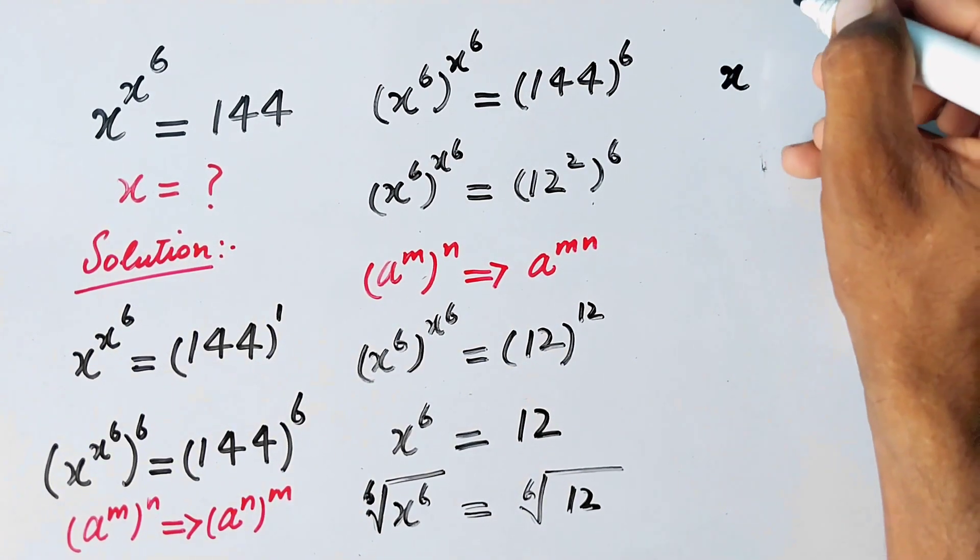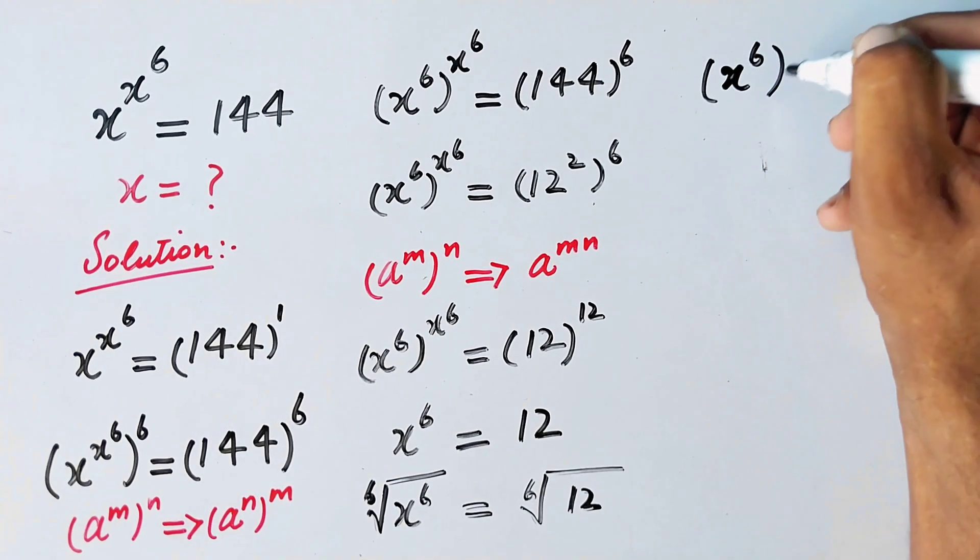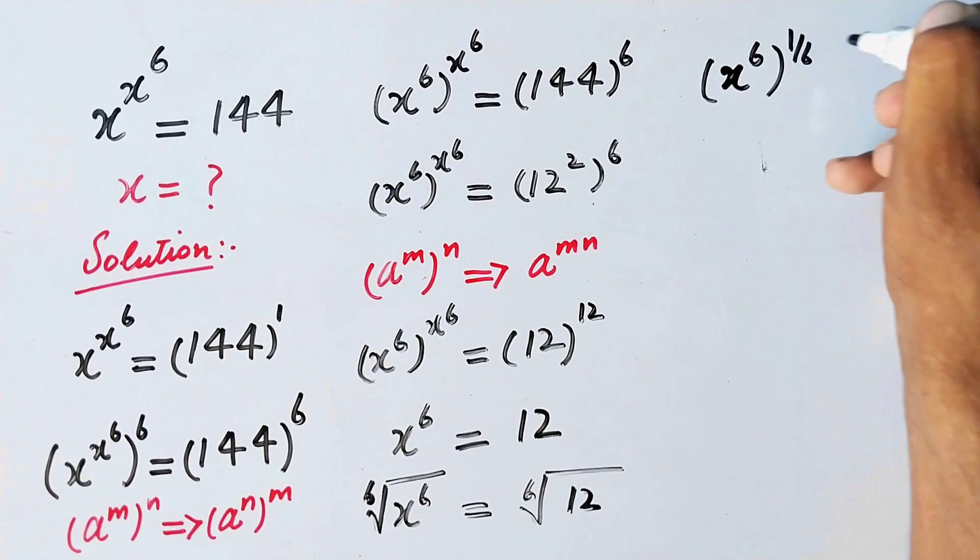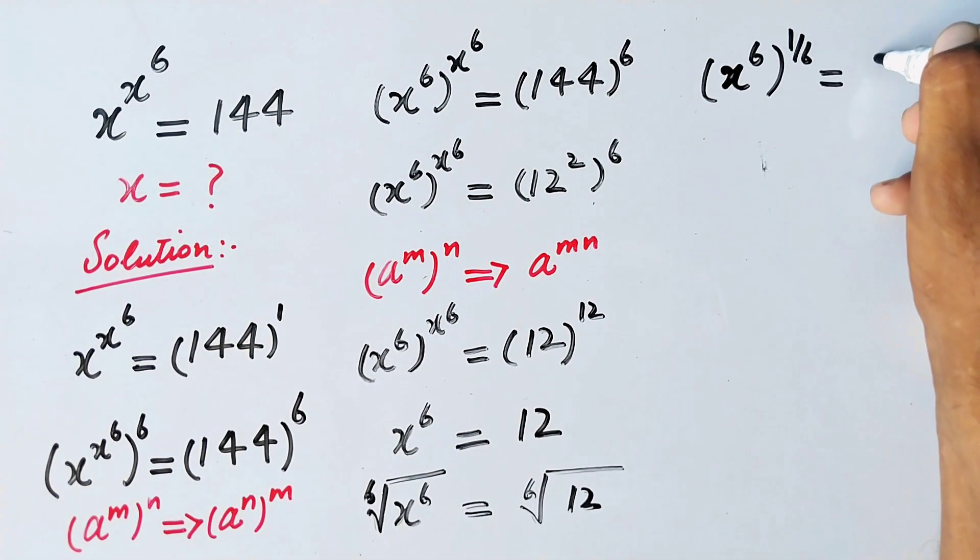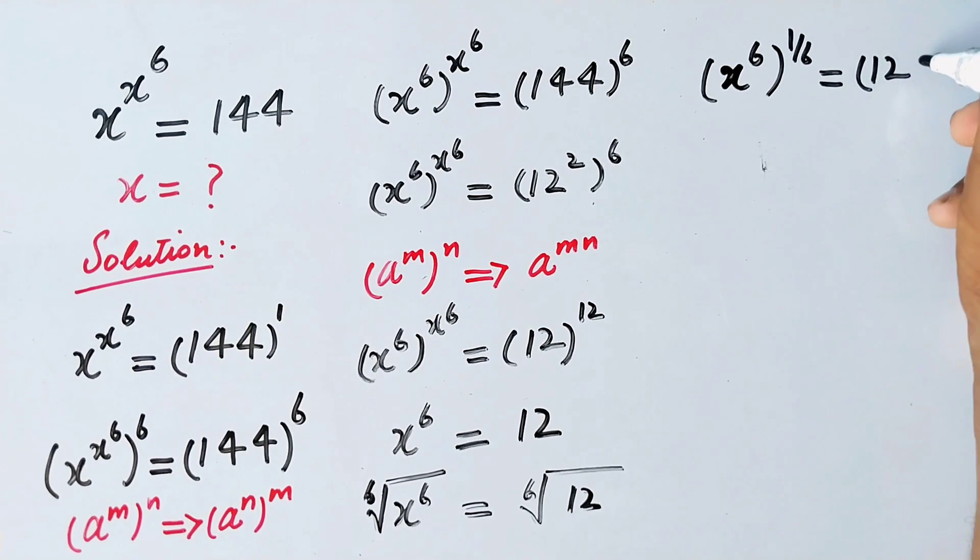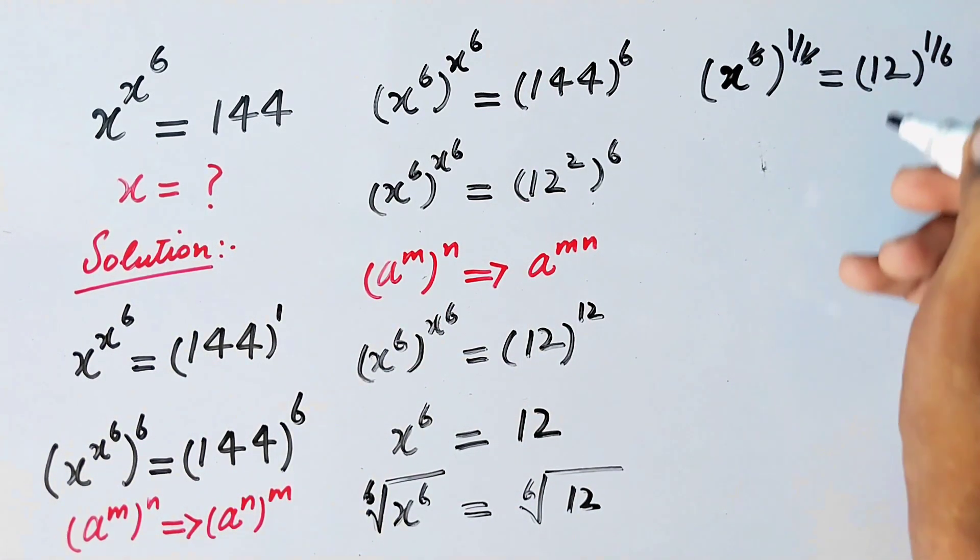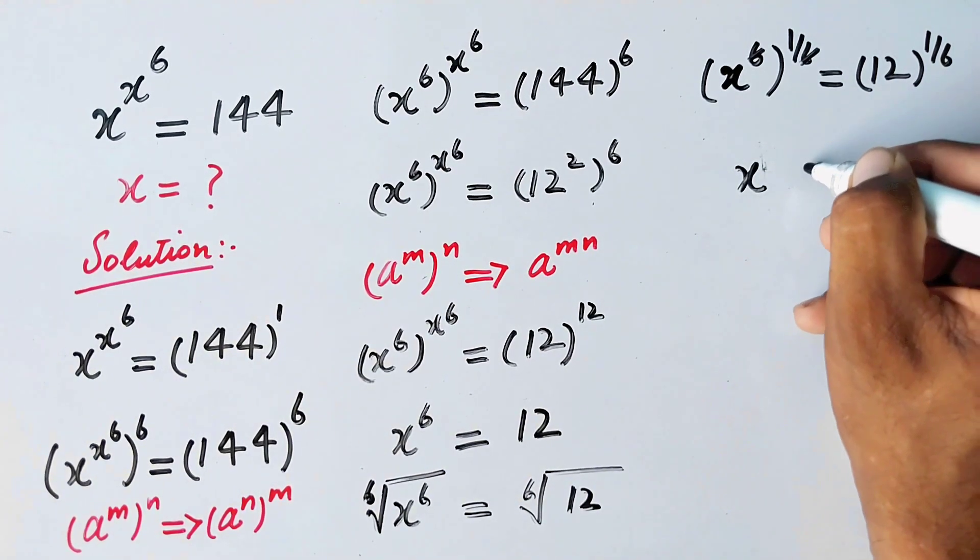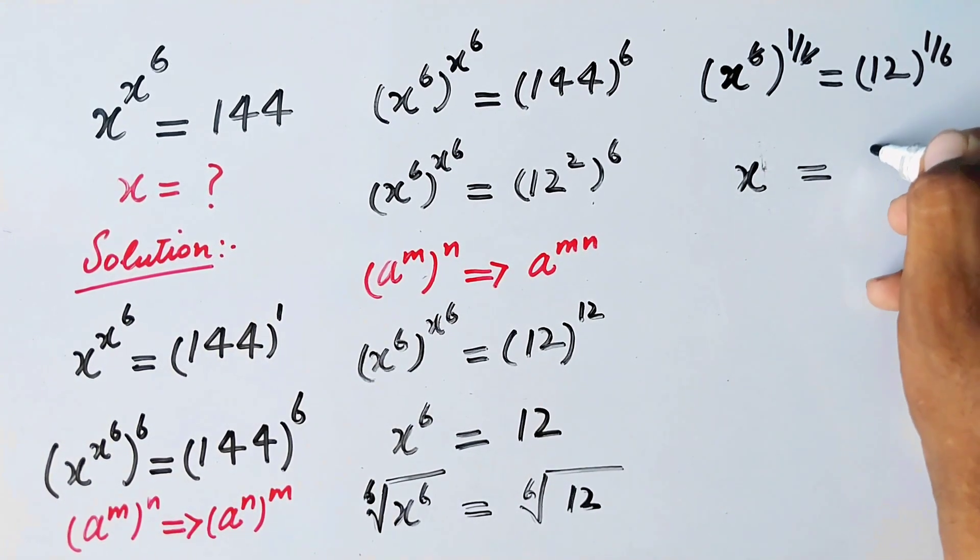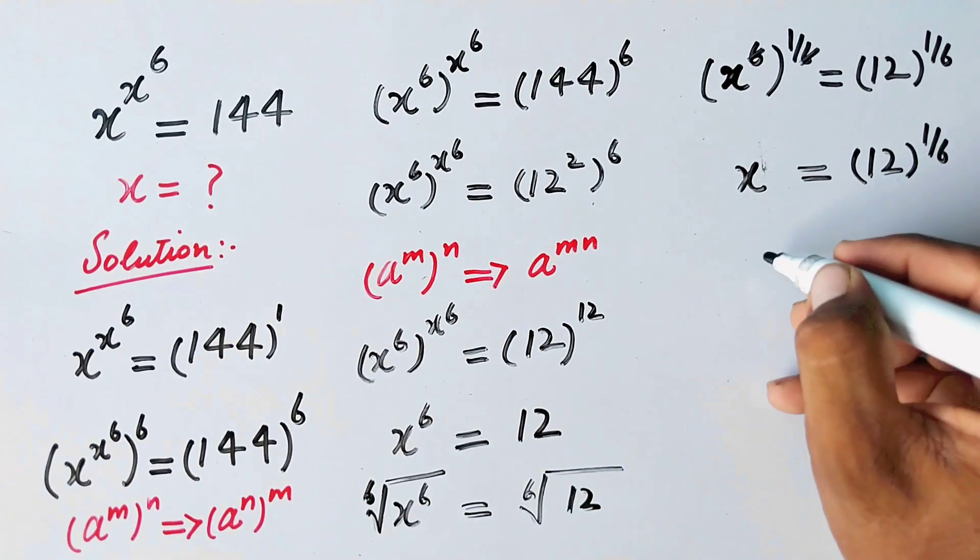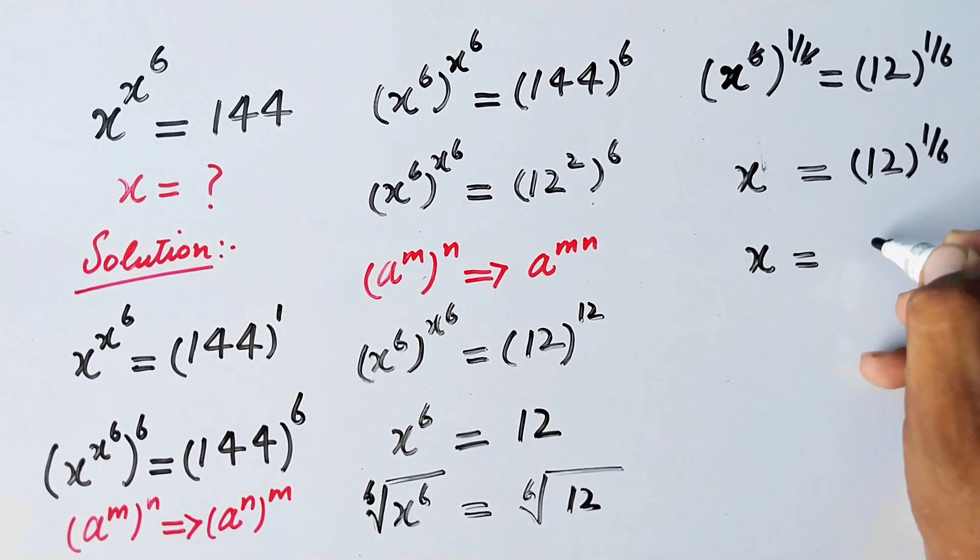Or we can write these values in this form: x raised to power 6, and we can write the 6th root as 1 over 6, equals 12^(1/6). Now this 6 will cancel with this 6, and it becomes x = 12^(1/6).